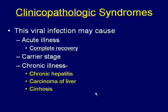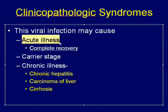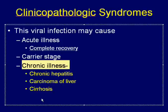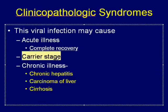Let us look at some clinical-pathological syndromes. Since it is a viral-induced condition, we can get an acute illness — acute hepatitis — and a chronic illness — chronic hepatitis, like any other inflammatory conditions. In addition, there is one more clinical syndrome known as the carrier state. As the name suggests, the patient is carrying the infection, and this is a very dangerous condition.